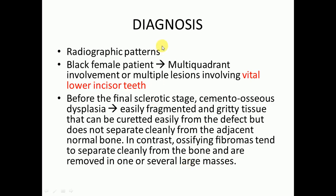In cemento-osseous dysplasia, there will be disorganized cemento-osseous material, whereas in ossifying fibroma the material is organized. Diagnosis is based on radiographic patterns: if the lesion is more common in black female patients with multi-quadrant involvement, or multiple lesions involving vital lower incisor teeth, cemento-osseous dysplasia is suggested. Before the final sclerotic stage, the tissue is easily fragmented and gritty and can be curetted from the defect but does not separate cleanly from adjacent normal bone — in contrast to ossifying fibroma, which separates cleanly.